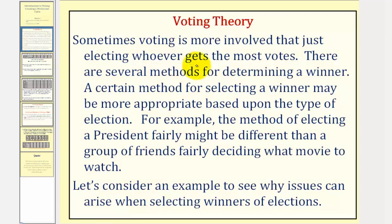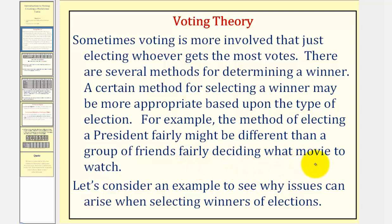Sometimes voting is more involved than just electing who gets the most votes. There are several methods for determining a winner of an election. A certain method for selecting a winner may be more appropriate based upon the type of election. For example, the method of electing a president fairly might be different than a group of friends fairly deciding what movie to watch.